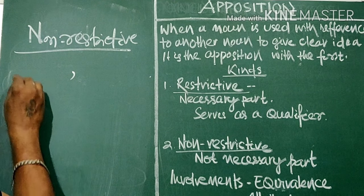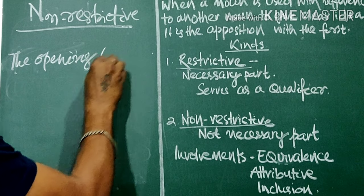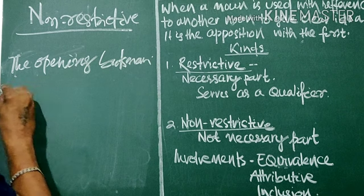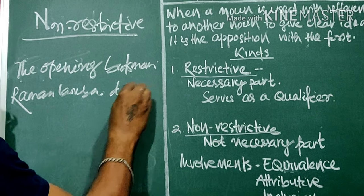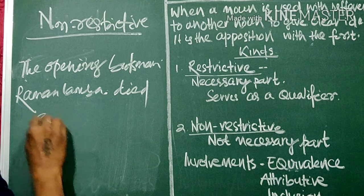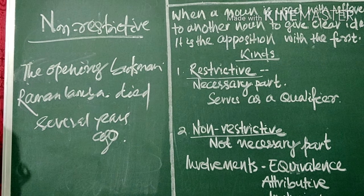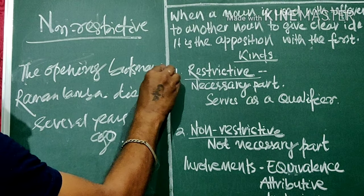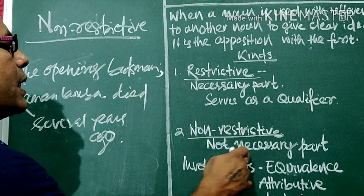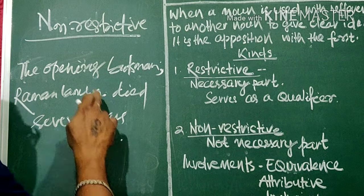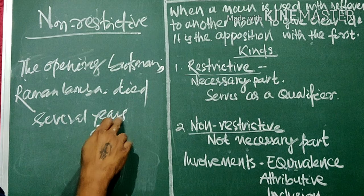For example: 'The opening batsman, Raman Lamba, died several years ago.' Here we put a comma. 'Raman Lamba' is not a necessary part of the first noun 'the opening batsman' — it is not at all required. So: 'The opening batsman, comma, Raman Lamba, died several years ago.'